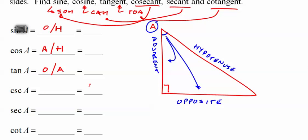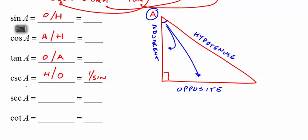So cosecant is just 1 over sine. If it's 1 over sine, you could also say it's hypotenuse over opposite. And if cosecant is 1 over sine, then sine is 1 over cosecant.